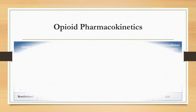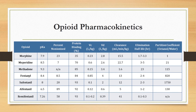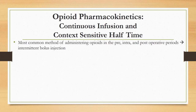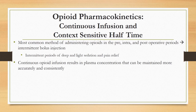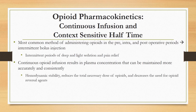This chart provides a side-by-side comparison of pharmacokinetic differences between common IV opioids used in the PACU, showing that no single property determines pharmacokinetics but rather a complex combination. The most common method of administering opioids is intermittent bolus injection, which although effective produces wide swings in drug plasma concentration, giving intermittent periods of deep and light sedation and pain relief. Continuous opioid infusion maintains plasma concentration more accurately and consistently, is associated with hemodynamic stability, reduces the total necessary dose, and decreases the need for opioid reversal agents.